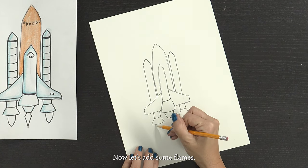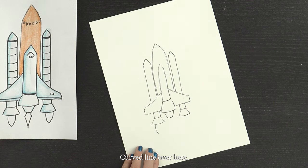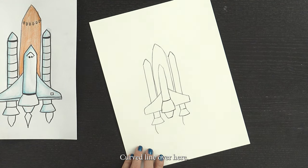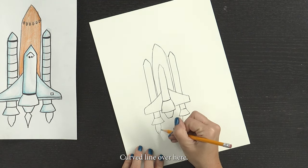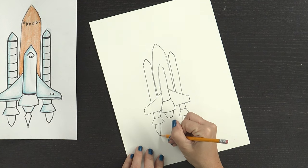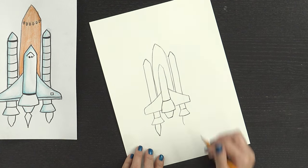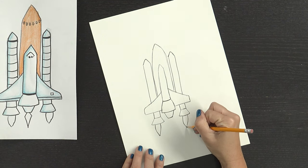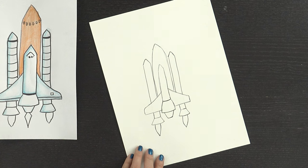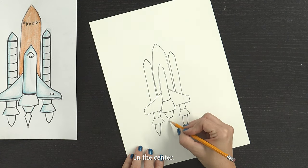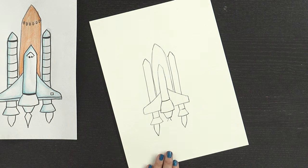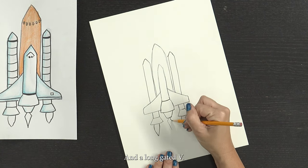Great job! Now let's add some flames. Curve line over here. Curve line over here. Connect them. Connect them with a V. In the center, a triangle with the tip missing just a little bit, and then an elongated V.